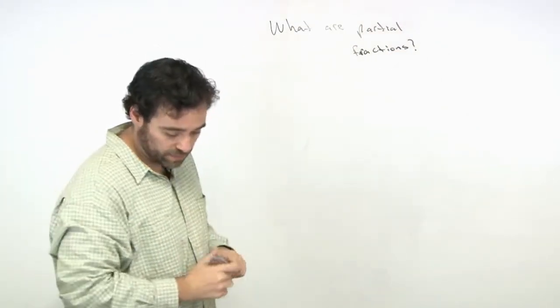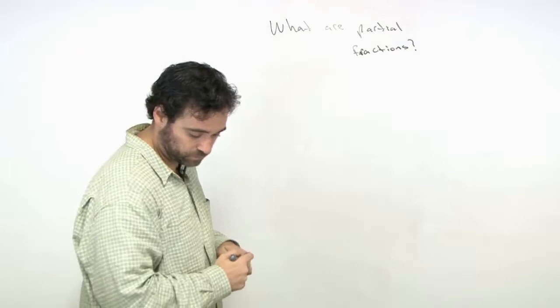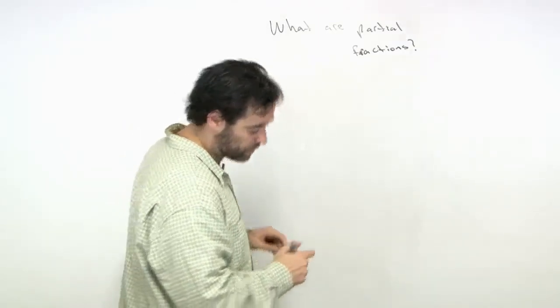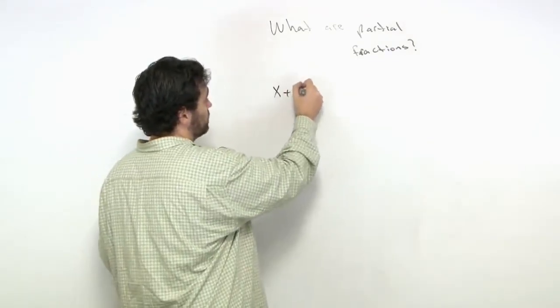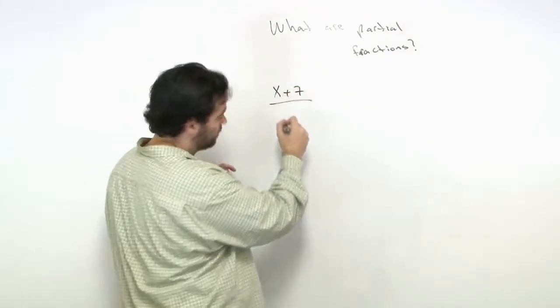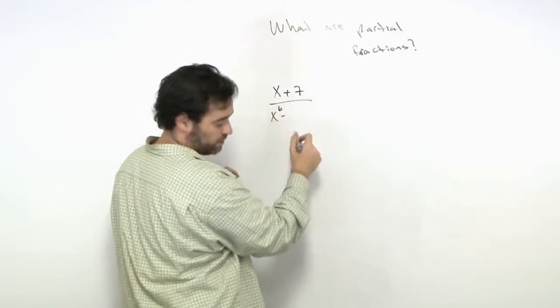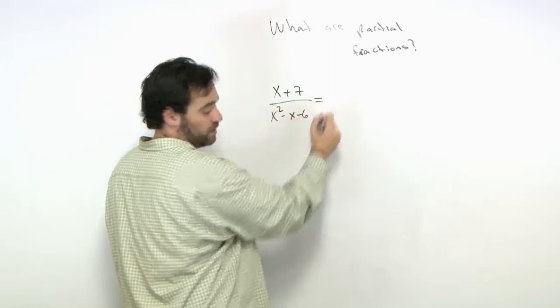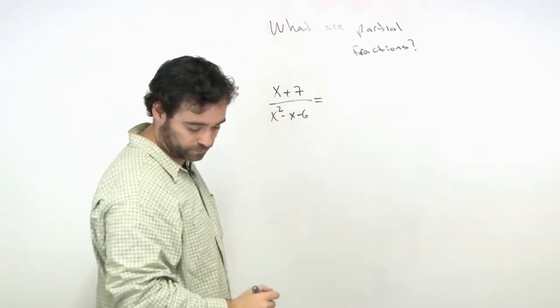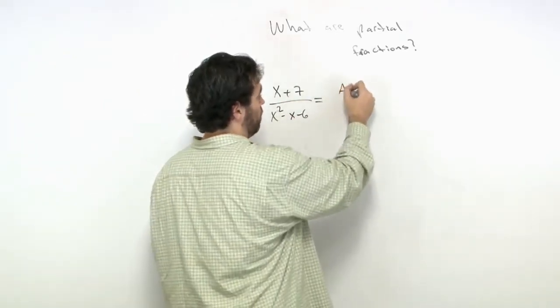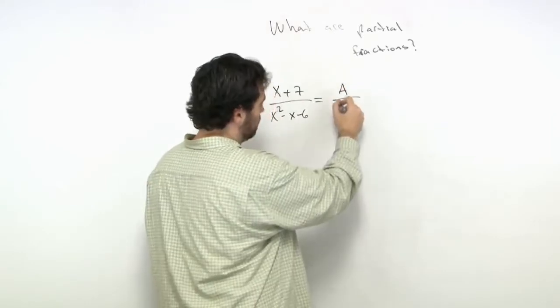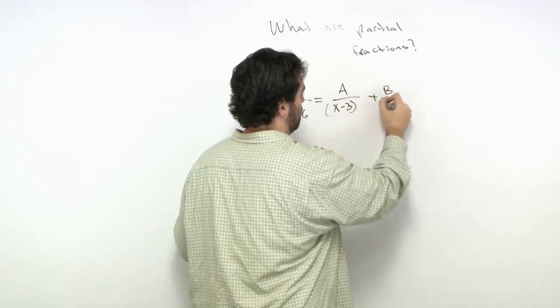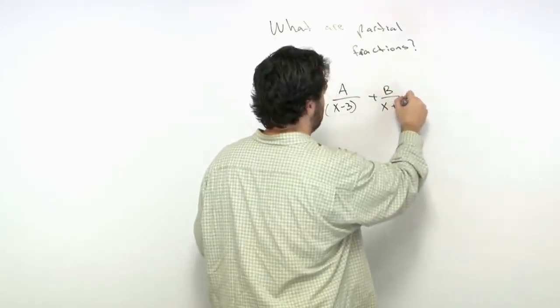Let's look at an example. We have (x+7)/(x²-x-6). We write this as A/(x-3) + B/(x+2).